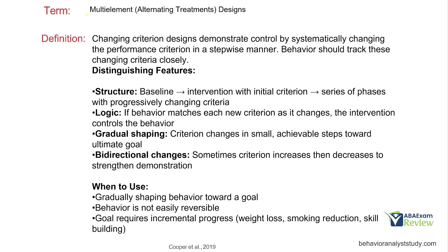Changing criterion designs demonstrate control by systematically changing the performance criterion in a stepwise manner. It might look something like this: your starting criterion is set, and you want behavior to sit right around that criterion. As the criterion changes downward, you want behavior to follow it. If behavior plummets far below the criterion, it may not demonstrate experimental control. This is why changing criterion designs can be tricky — you need behavior to stick right around the criterion to demonstrate control.